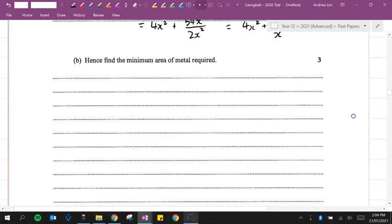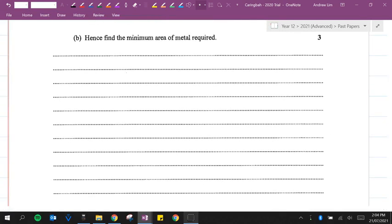Okay, question B. Hence, find the minimum area of metal required. Now, whenever a question asks us to work out a minimum or a maximum, we need to differentiate and make the first derivative equal to 0, because then it will give us a maximum or a minimum.